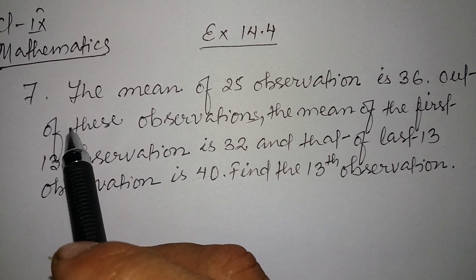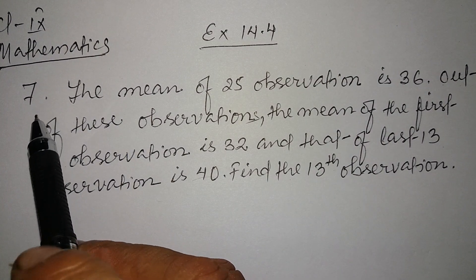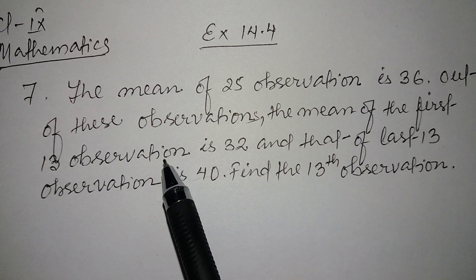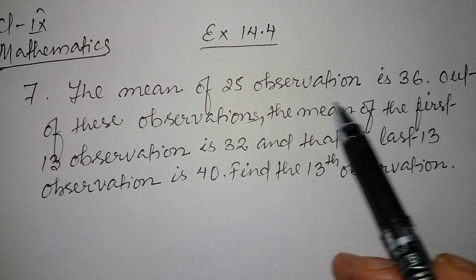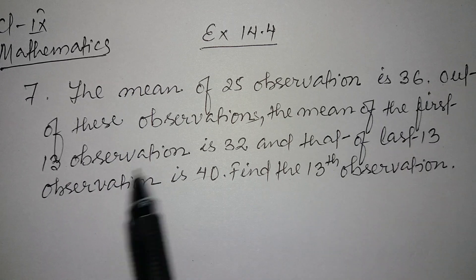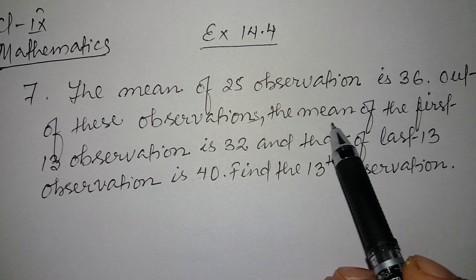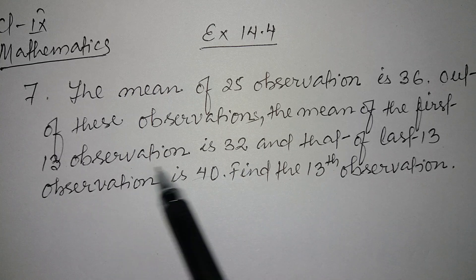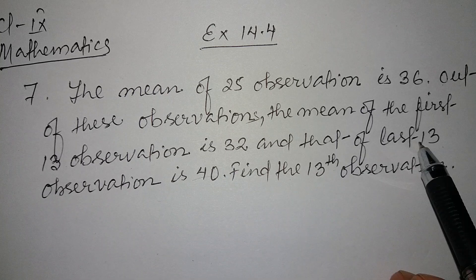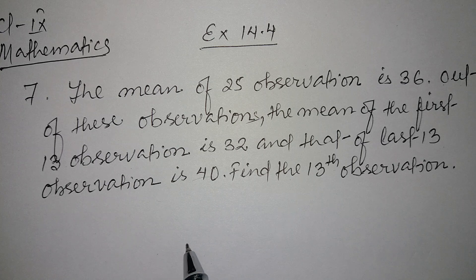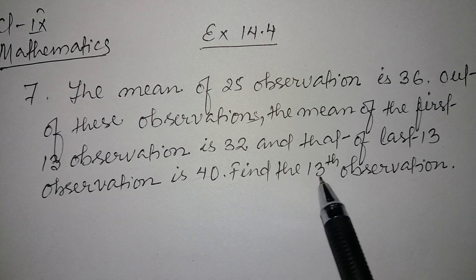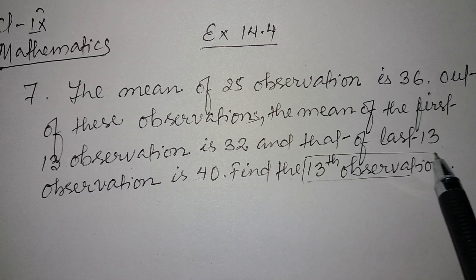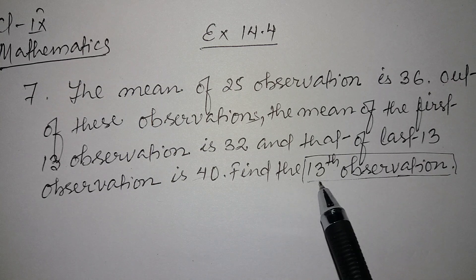In this video we're going to see question number 7, exercise 14.4, class 9 mathematics. The mean of 25 observations is 36. The mean of the first 13 observations is 32 and that of the last 13 observations is 40. We need to find the 13th observation.